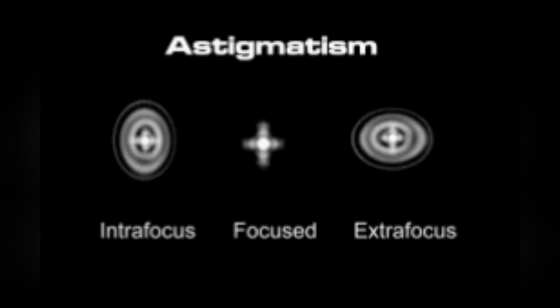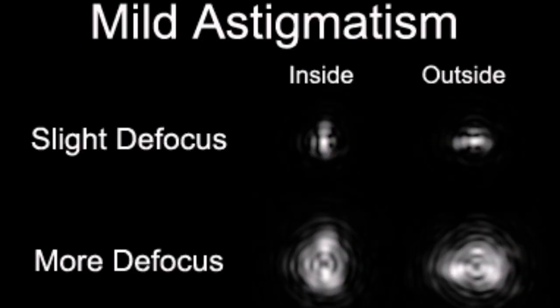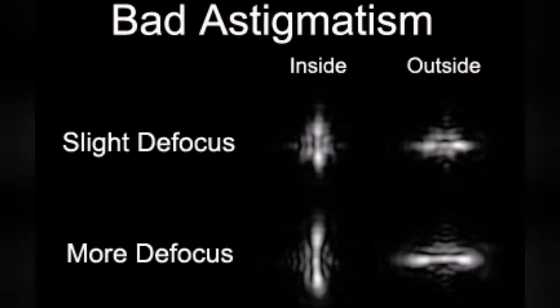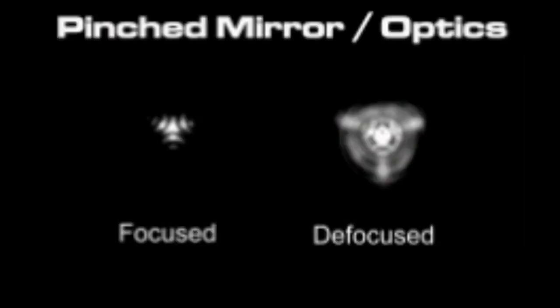Astigmatism is another problem. Astigmatism causes this distortion, elongation of the image. Out of focus, in focus. Mild astigmatism looks like this and the severe one looks like that. It's practically like a disc.